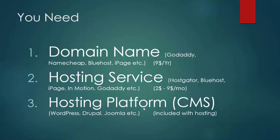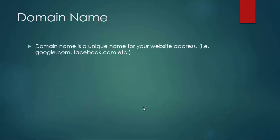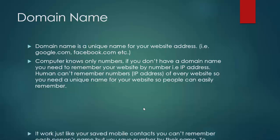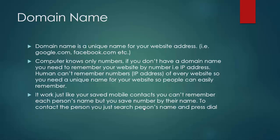A domain name is a unique name for your website address, like google.com or facebook.com. Computers know only numbers, so if you don't have a domain name you'd need to remember your website by numbers. Humans can't remember numbers for every website, so you need a unique name so people can easily remember it. It works just like saving mobile contacts — you save a number by name so you can easily find and contact the person.